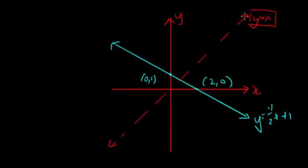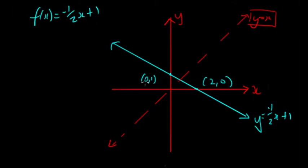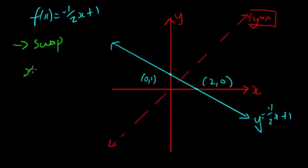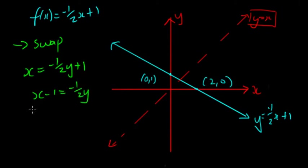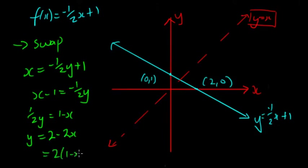We'll do a quick example. If we have the line y = x just for visualization, we have the function f(x) = -½x + 1. This gives us points (0, 1) and x-intercept (2, 0). Now, if we want to find the inverse — a reflection in y = x — we swap x and y in the equation: x = -½y + 1, so x - 1 = -½y, giving ½y = 1 - x, therefore y = 2 - 2x.